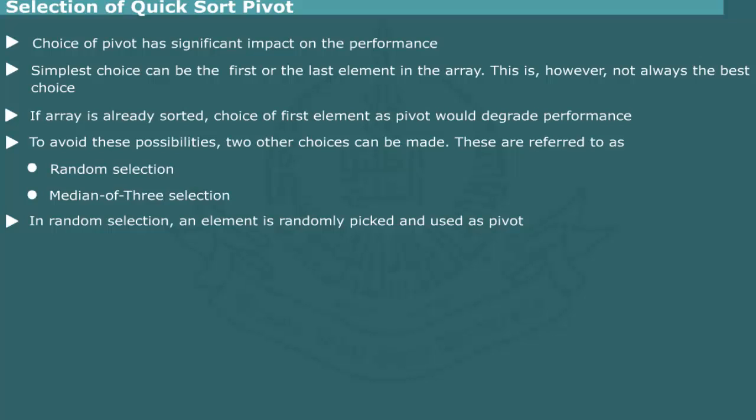In random select, an element of the array is randomly picked and assigned to the pivot. Experience shows that this is the safest choice. However, in actual implementation, we need a random number generator to produce numbers between the upper and lower bound of an array or subarray. This is an additional overhead and increases the running time.